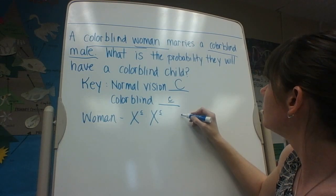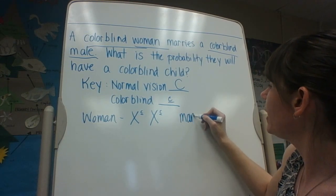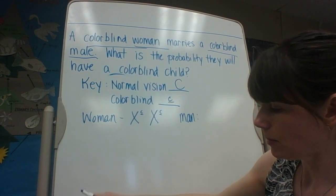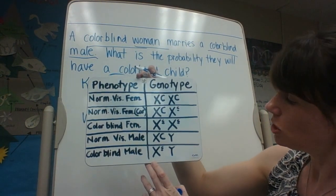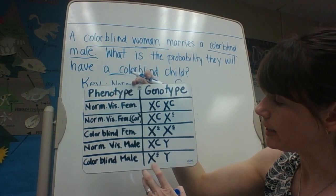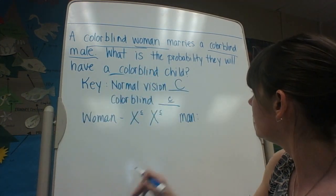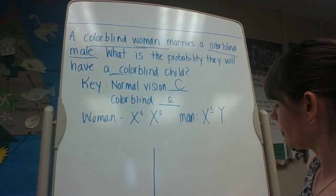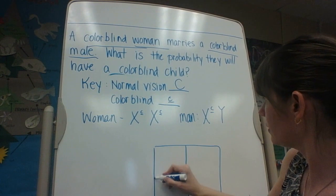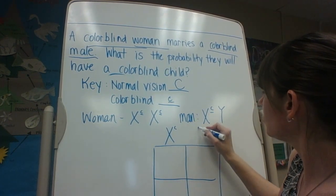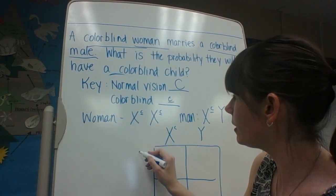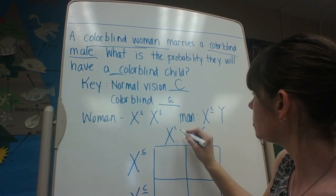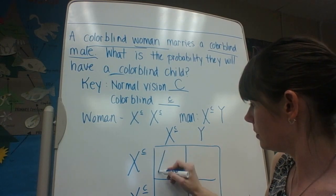The man is also colorblind, and he has one recessive allele on his X: X little c, Y. Now we'll do our Punnett square with the male X little c, Y on top and the female X little c, X little c on the side.